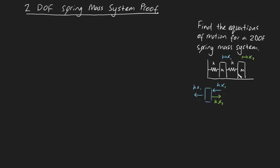Now let's consider the free body diagram on the second mass. We can use the fact that it's going to be equal and opposite forces, but let's apply the same method to be sure. If the second block is moving away a distance x2 while keeping the first one still, that means this spring will be under tension, pulling it back with a force kx2. And if the first block is moving but the second is still, the spring will be compressed, pushing the second block away with a force kx1. Notice that these forces are equal and opposite.